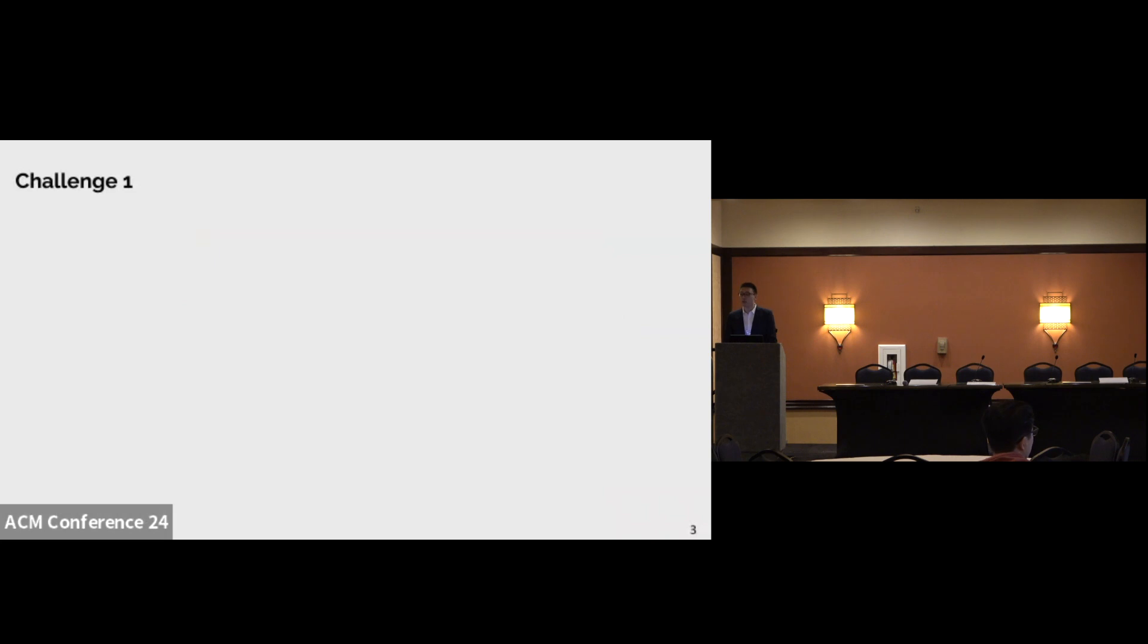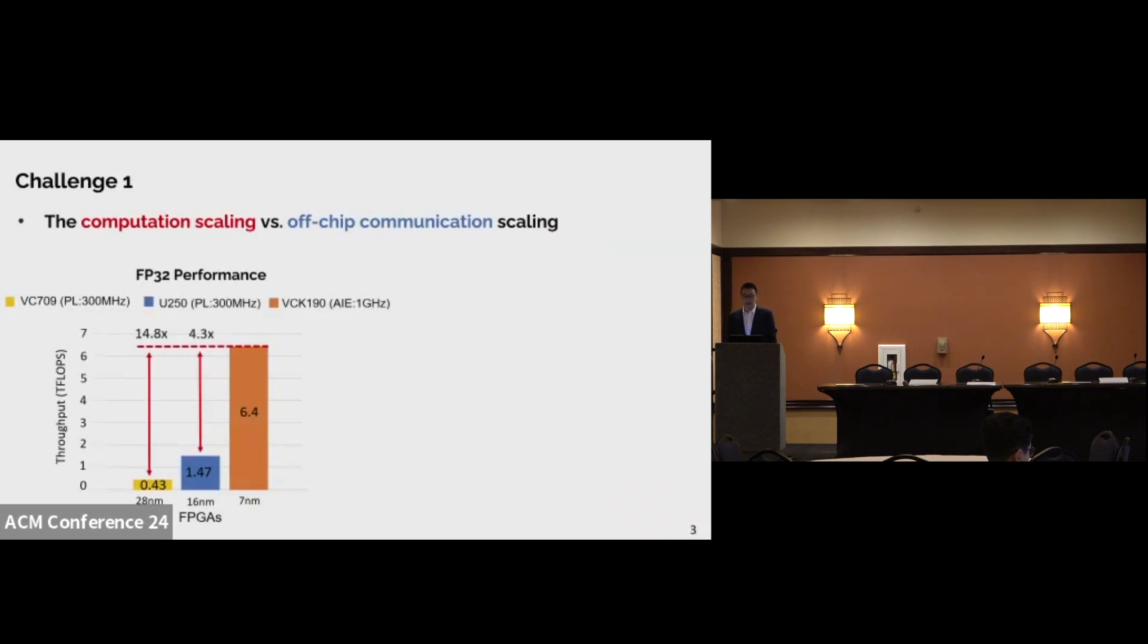The AI engine arrays, the processing system, and the programmable logic can access the off-chip memory through the network on-chip with 25.6 gigabytes per second bandwidth. Compared with previous FPGAs, in terms of computation scaling, the throughput of VCK 190 with AI engines running at 1 gigahertz under FP32 data type is 4.3 and 14.8x compared with U250 and VC709 FPGAs with PL running at 300 megahertz. However, in terms of DDR off-chip bandwidth scaling, the bandwidth of VCK 190 is one third of U250 FPGA and about 85% compared with VC709 FPGA.